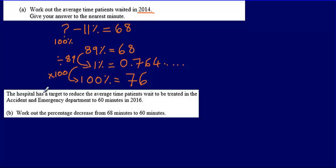Then we're told that the hospital has a target to reduce the average time patients wait to be treated in the accident and emergency department to 60 minutes in 2016. We're asked to work out the percentage decrease from 68 minutes to 60 minutes.